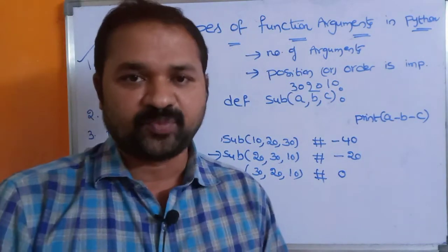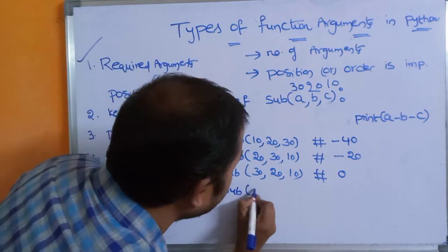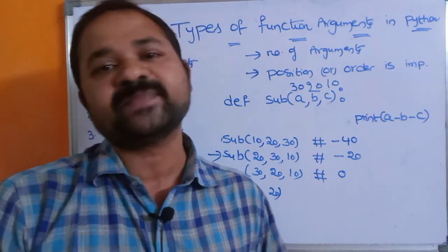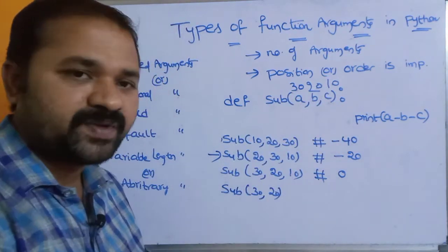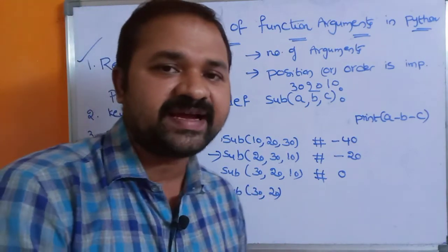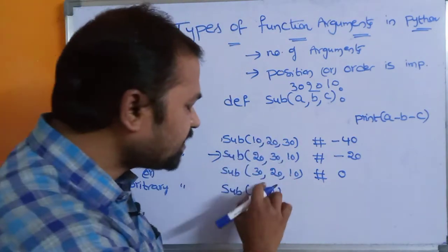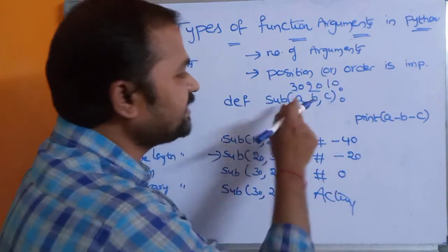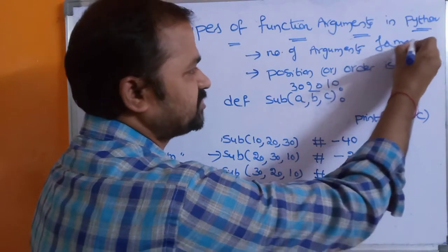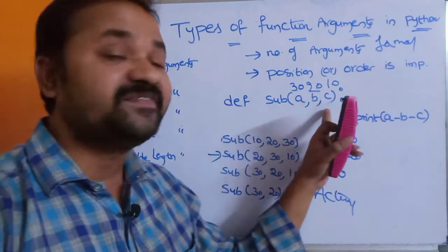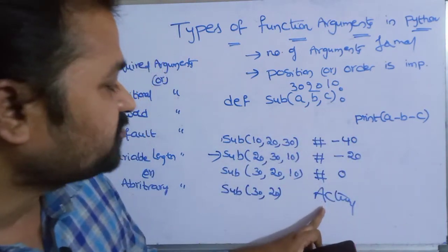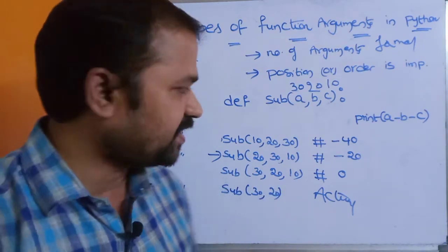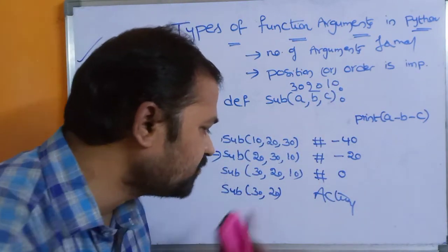If we call sub(30, 20) with only two arguments, the Python interpreter will display an error message because the function definition contains three arguments but we passed only two. The parameters in the calling function are called actual arguments, whereas a, b, c in the function definition are called formal arguments.